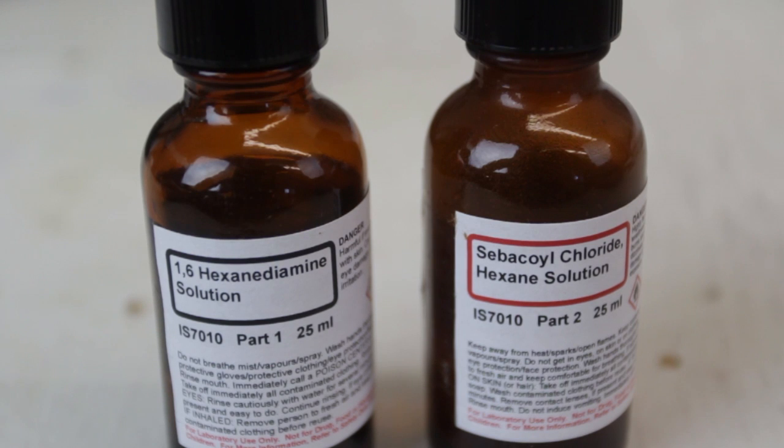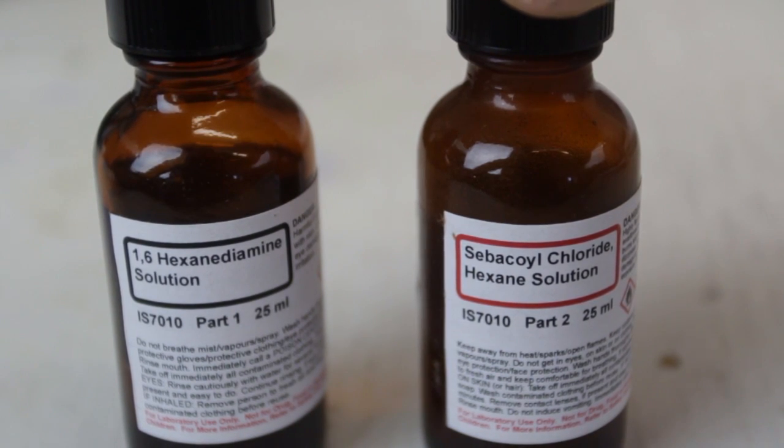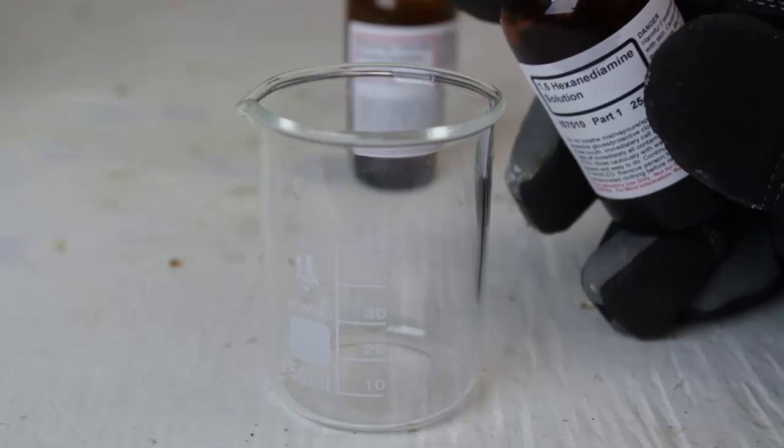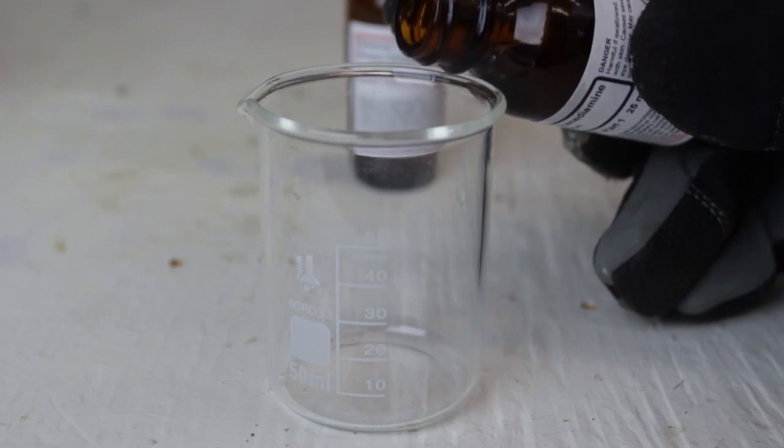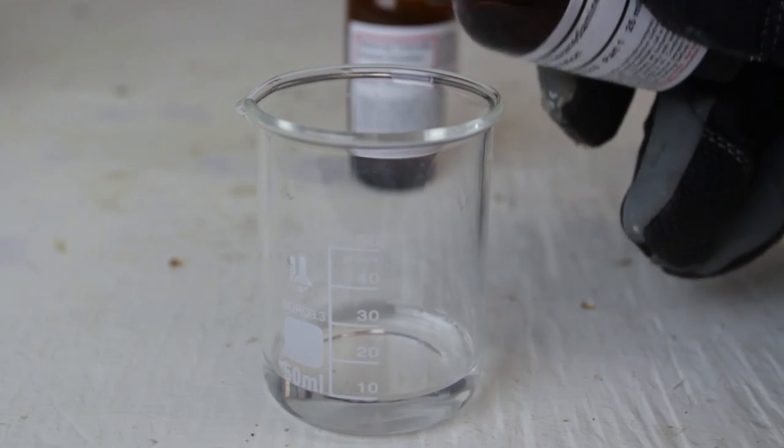For this experiment we're going to need these chemicals: hexamethylenediamine solution and sebacoyl chloride hexane solution. First we're going to add hexamethylenediamine and we're going to get 10 milliliters of solution right here.